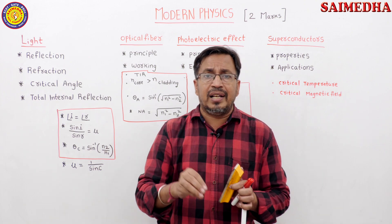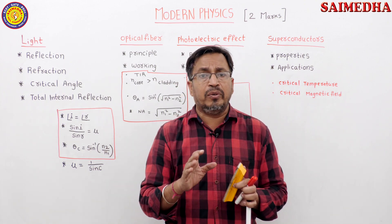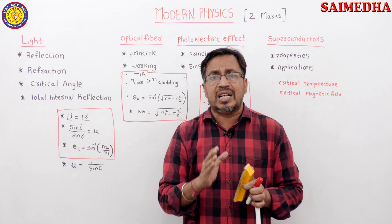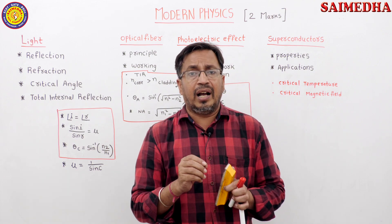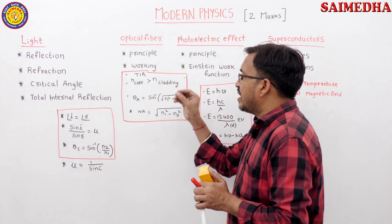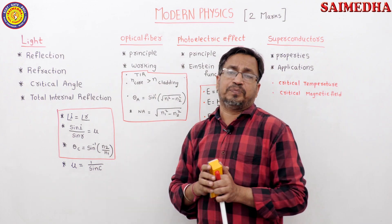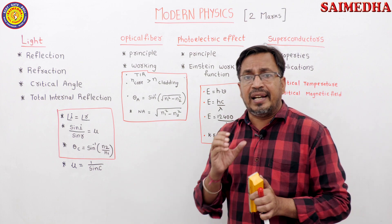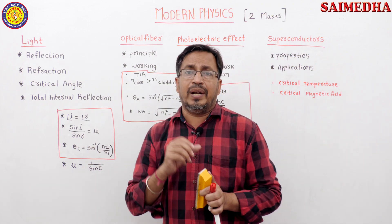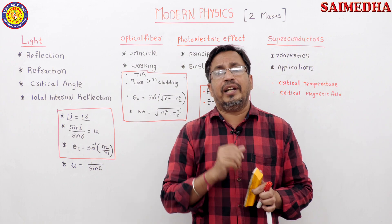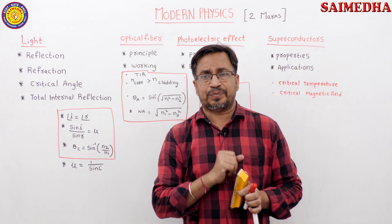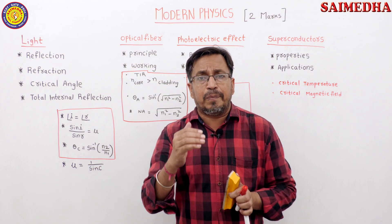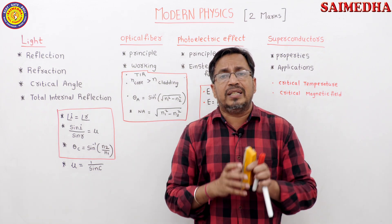Three conditions: The first is core refractive index is greater than cladding refractive index. And second one, angle of incidence must be greater than critical angle.